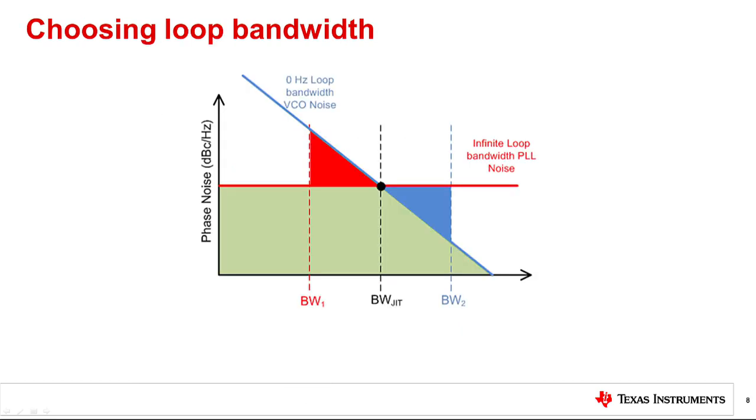In order to minimize jitter, choose the loop bandwidth to be BWJIT, which minimizes the area under the curve. This is where the free-running VCO and phase noise are equal.